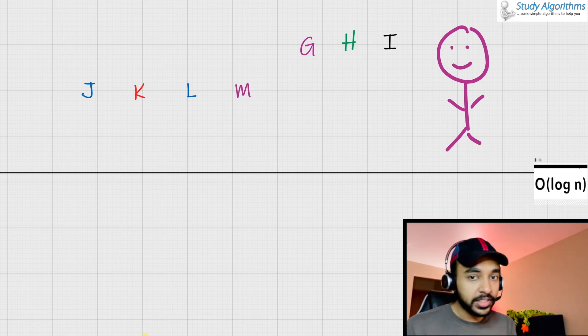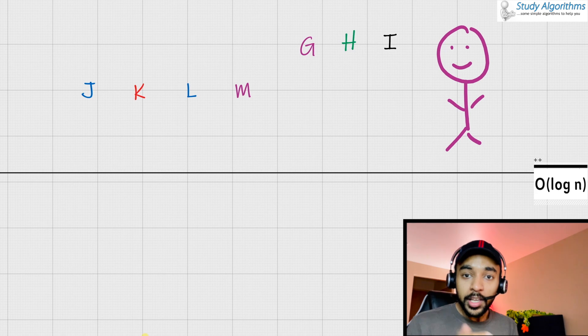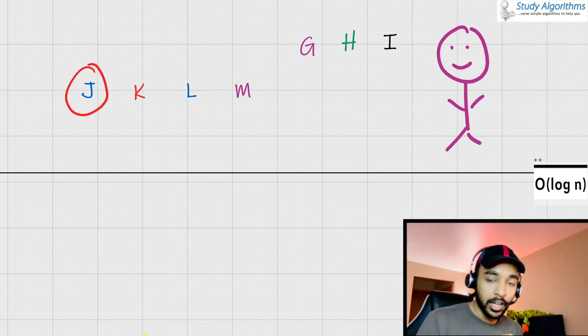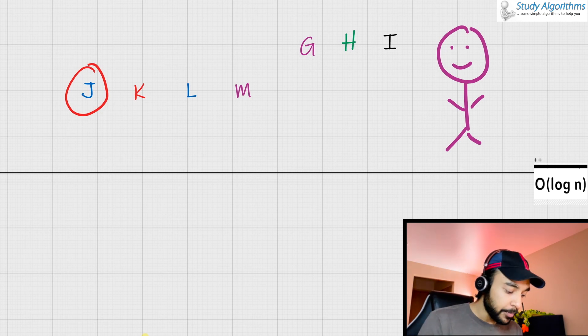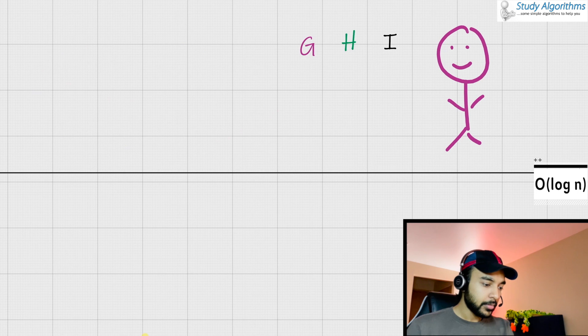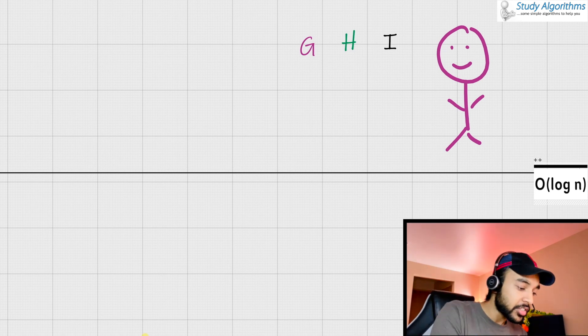This is also known as the divide and conquer algorithm. You can check the link in the description below to know more about it. But going forward, you see that J is the middle character now. So, you ask me if the character that you have guessed comes before J or after J. I again say you that it comes before J. So, you can get rid of all of these characters. For the one last time, you can ask me, is my character H? And yes, the character that I had guessed was H.